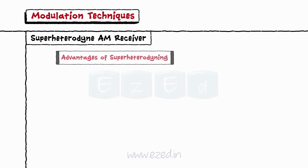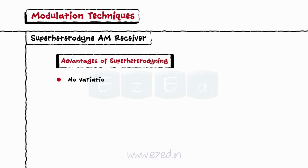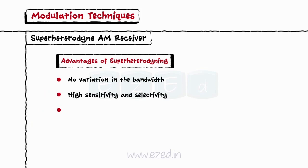The advantages of super-heterodyning are: no variation in the bandwidth, high sensitivity and selectivity, and high adjacent channel rejection.